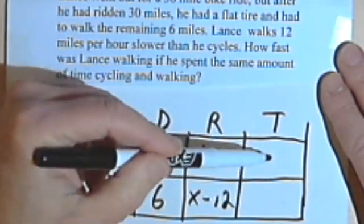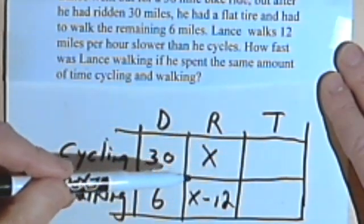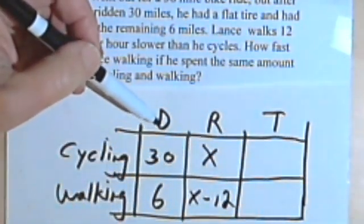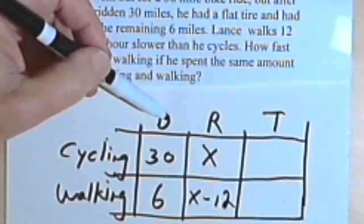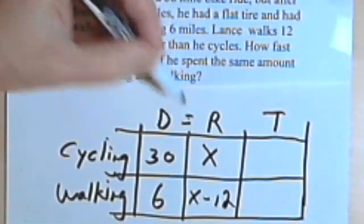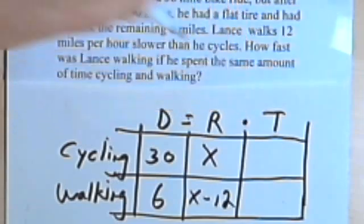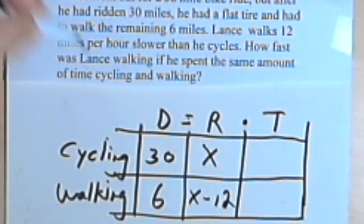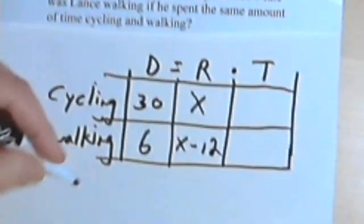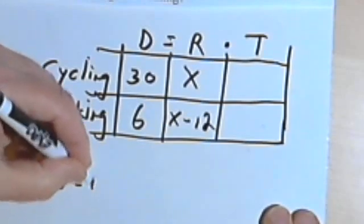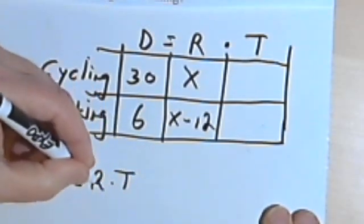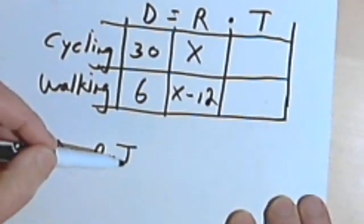And I'd like to fill in the times, but I'm not given the times. So what I can do is I can take the basic formula, distance equals rate times time. This is a formula you'll have to memorize. Distance equals rate times time. And I'll solve that for the time.